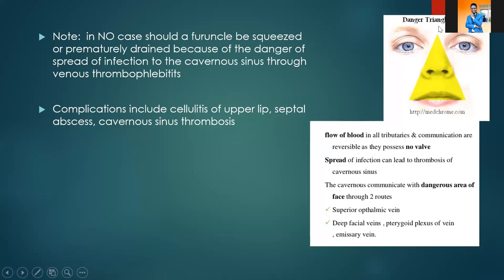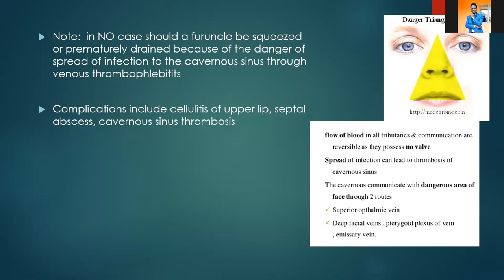The danger triangle tip is between the glabella or nasal bridge and includes the whole nose and upper lip. The reason it is not advisable to tamper with a pimple or furuncle in this area is because the blood vessels that drain this area do not have valves, so blood can flow back and forth. The spread of infection can lead to thrombosis of the cavernous sinus, which communicates with the danger triangle via the superior ophthalmic vein and deep facial veins.